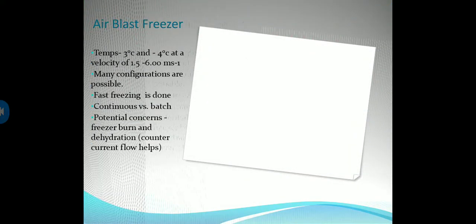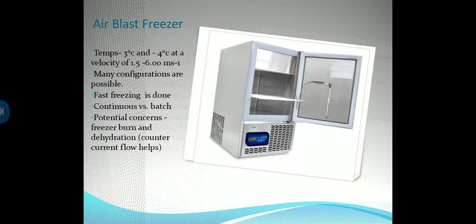The air blast freezer operates at minus 30 to minus 40°C at a velocity of 1.5 to 6 meters per second. Many configurations are possible. Fast freezing is done continuously. Potential concerns include freeze burn and dehydration.